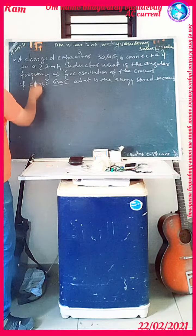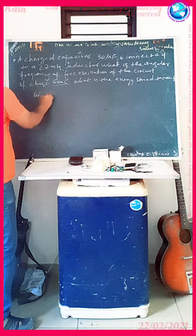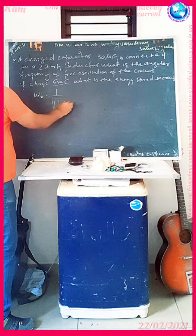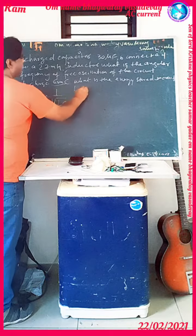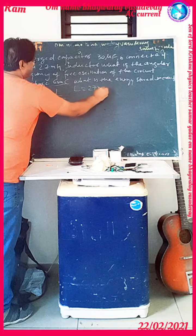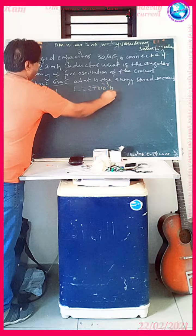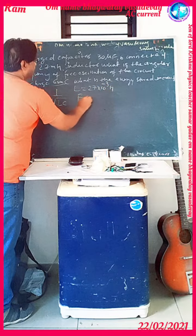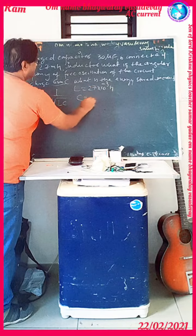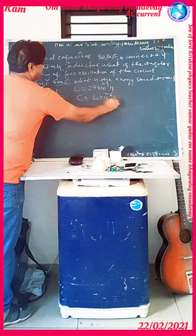Now we look at the solution. The formula is: ω_R is equal to 1 over √(LC). L is given here — that is 27 mH, i.e., 27 × 10⁻³ Henry. And C is given here — that is 30 µF, i.e., 30 × 10⁻⁶ Farad.